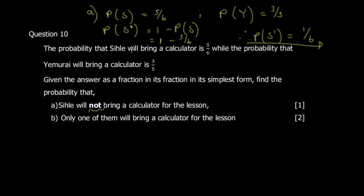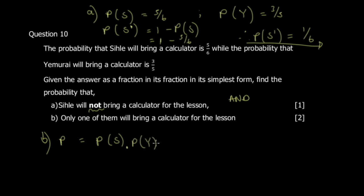Part b asks: what is the probability that only one of them brings a calculator? This can happen in two ways: Cifler brings it and Mrai does not, OR Mrai brings it and Cifler does not. Since these events happen simultaneously, we use the AND rule (multiplication).